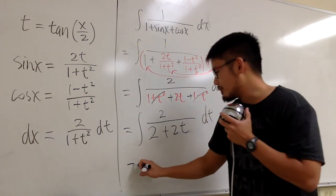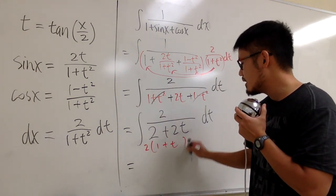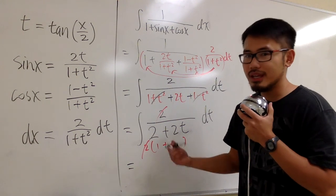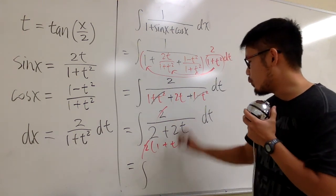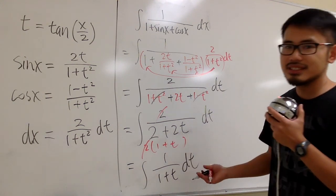So what can we do? Well, of course, you can factor out 2 in the denominator, and then this is 1 plus t. So this 2 and that 2 will cancel, and this is just the integral of 1 over 1 plus t dt.